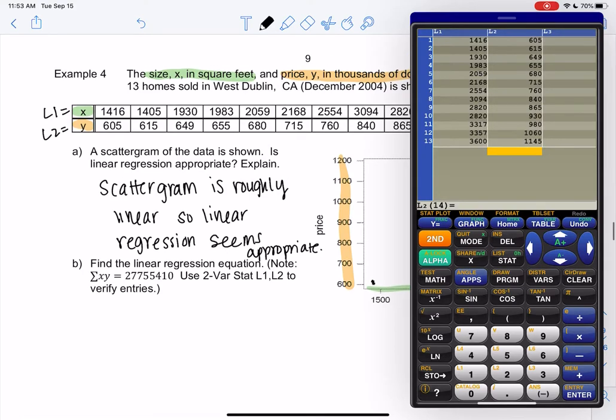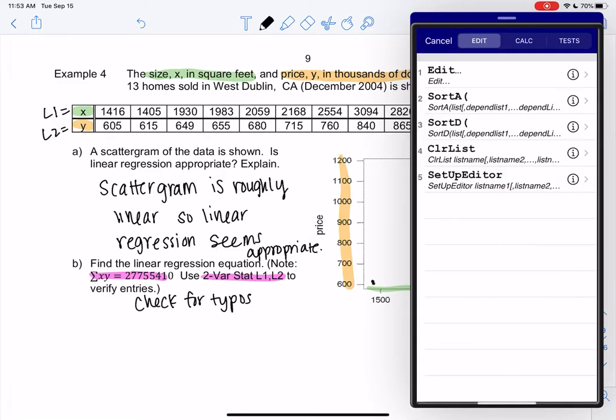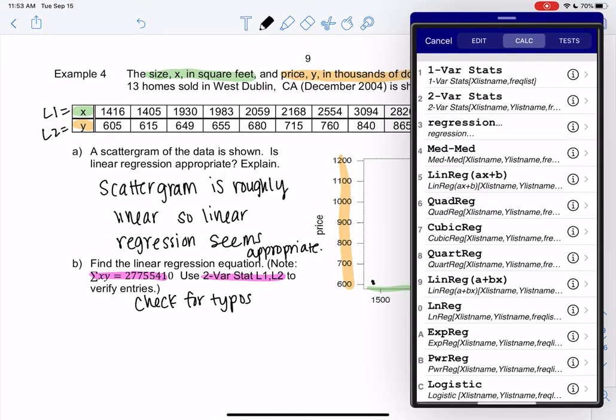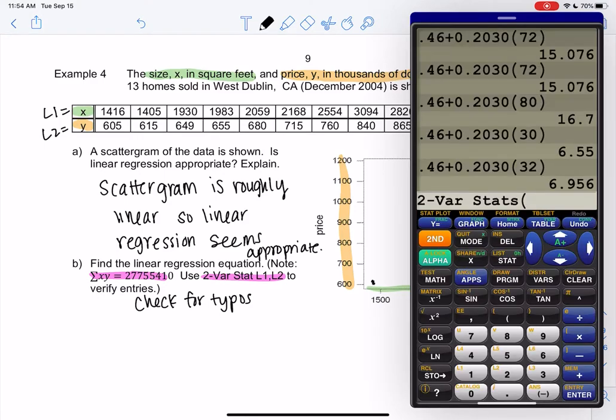So before we do regression, we can use this piece right here to check for typos. So this is only to check for typos, no other purpose. So we're going to go back to that menu. This is basically our favorite menu, stat calc. And you see two var stats? We're not using two var stats. We're just using it to check our work.